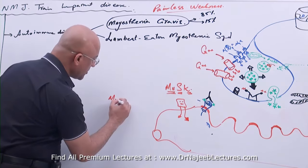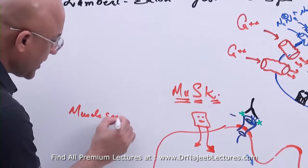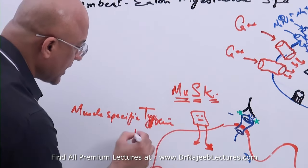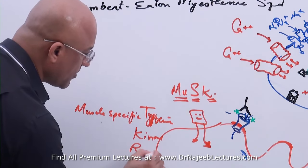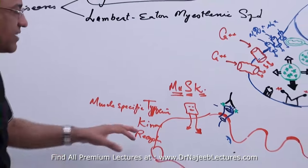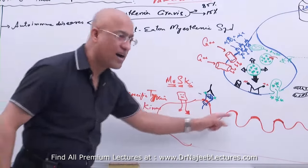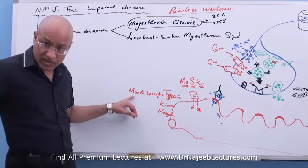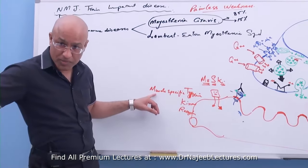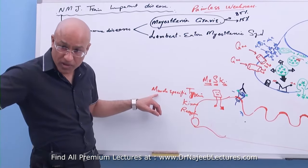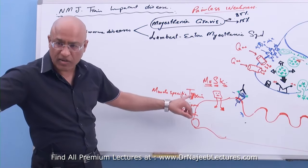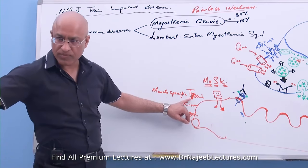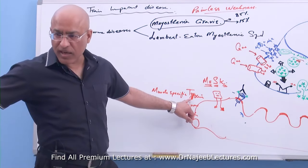The full name is Muscle Specific Tyrosine Kinase Receptor. This protein is present in the sarcolemma — it is a sarcolemmal protein present in the post-synaptic membrane. It is muscle specific, acts as a receptor, and functionally produces kinase activity on tyrosine residues.